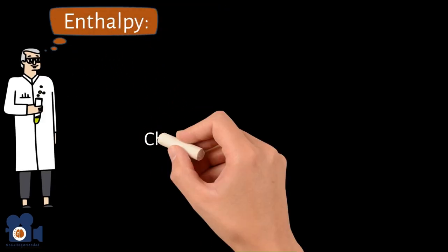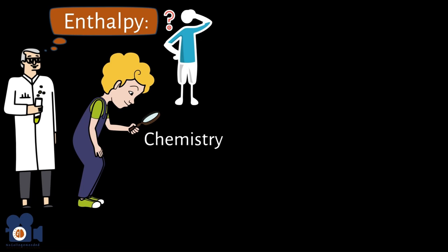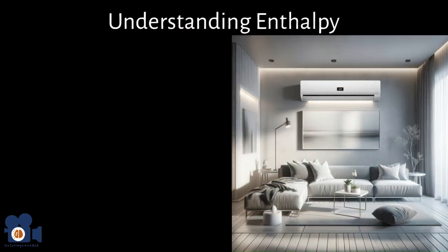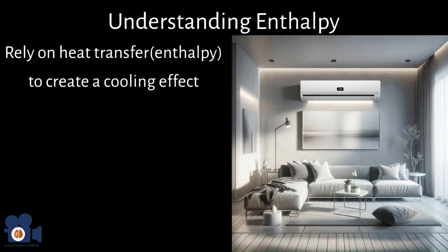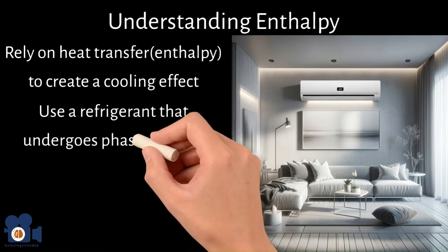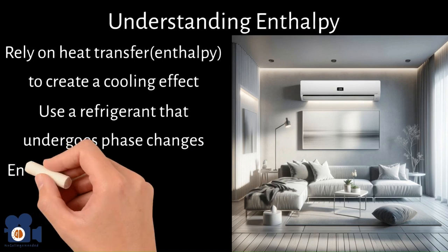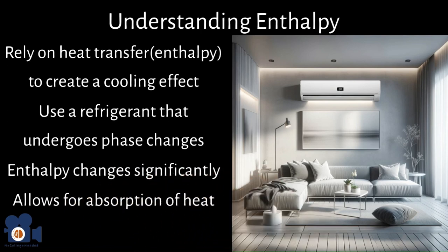Today we're going over enthalpy in chemistry. It may not seem exciting, but it's essential to understand to be an exceptional chemist. For example, modern air conditioning and refrigeration wouldn't be possible without understanding enthalpy. These systems rely on the transfer of heat — enthalpy — to create a cooling effect. They run on vapor compression cycles using a refrigerant that undergoes phase changes from liquid to gas and back in a closed system. During these phase changes, the enthalpy of the system changes significantly, allowing for the absorption and release of heat.